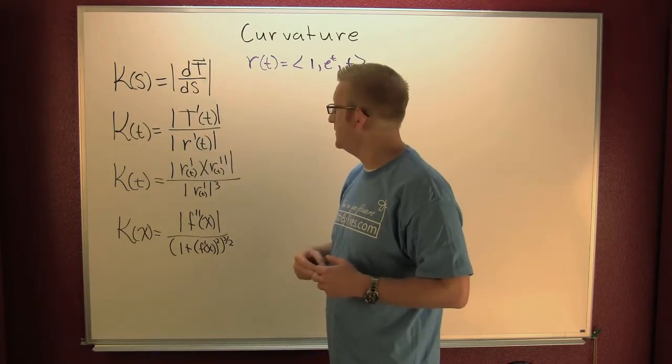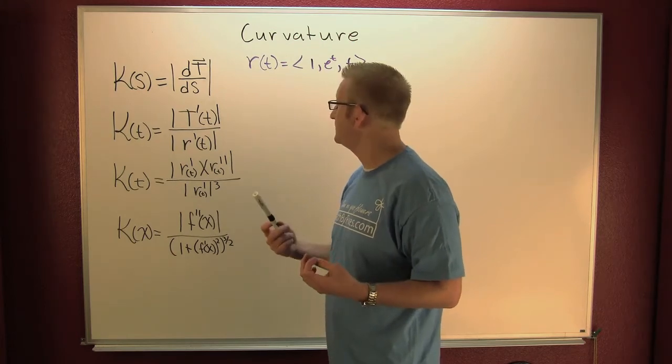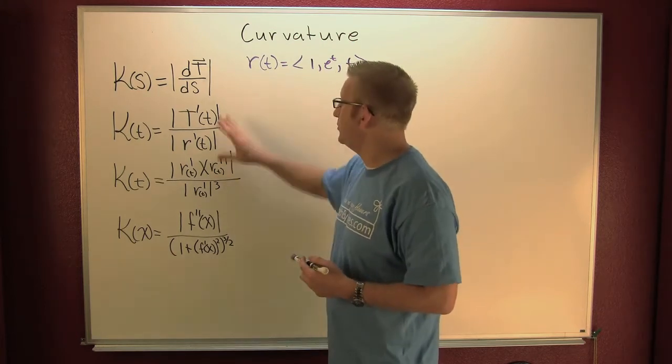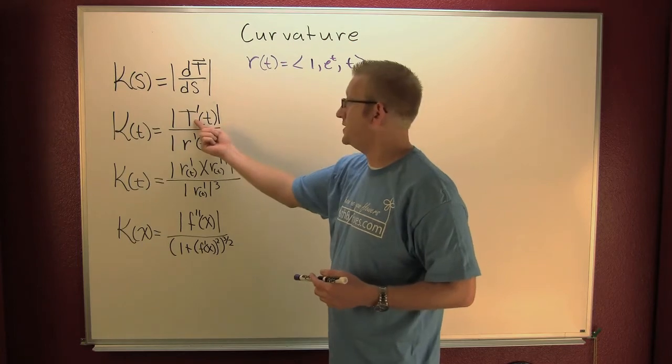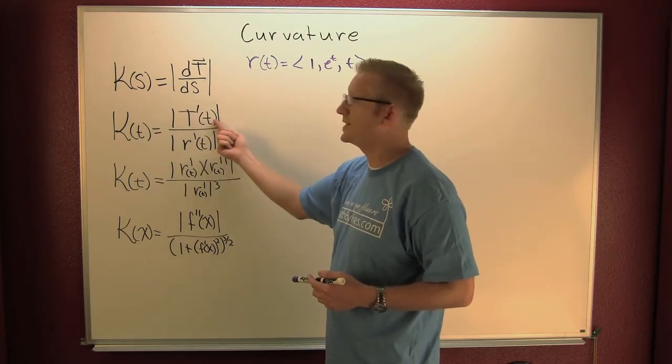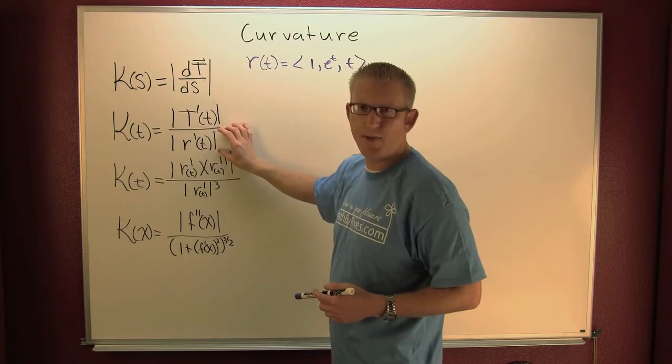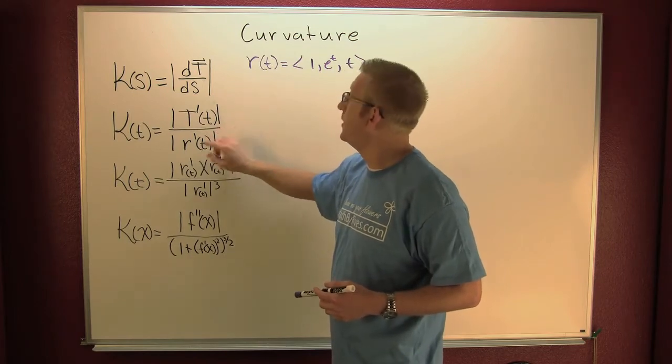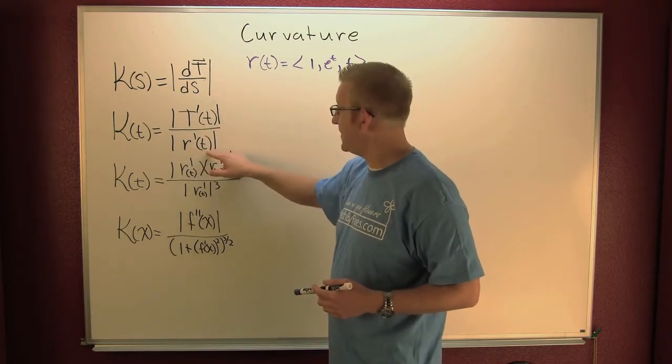After some manipulation in a chain rule of our differentials, we found the form where it's the change in the tangent with respect to t divided by the magnitude of the change in the position with respect to t.